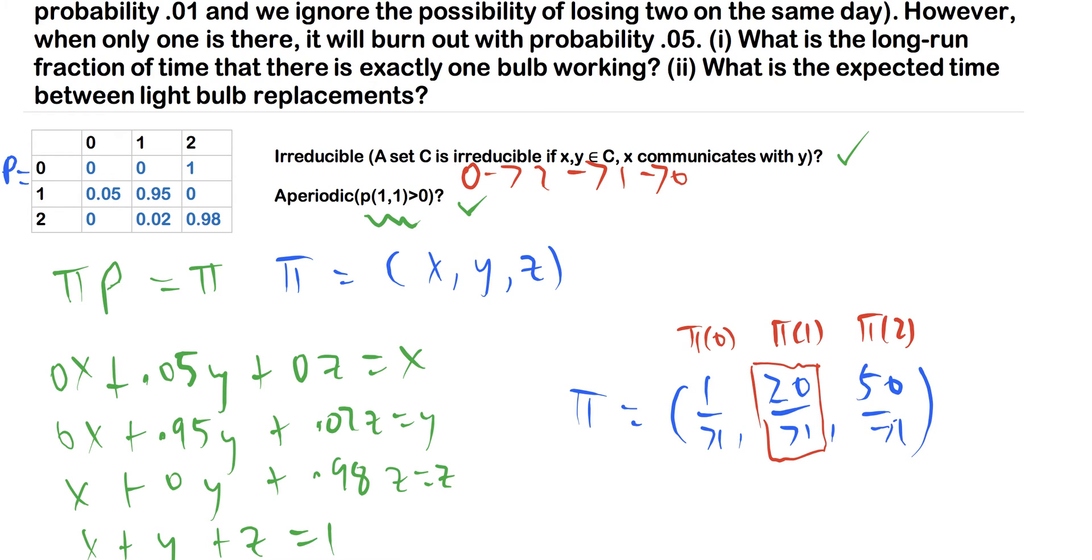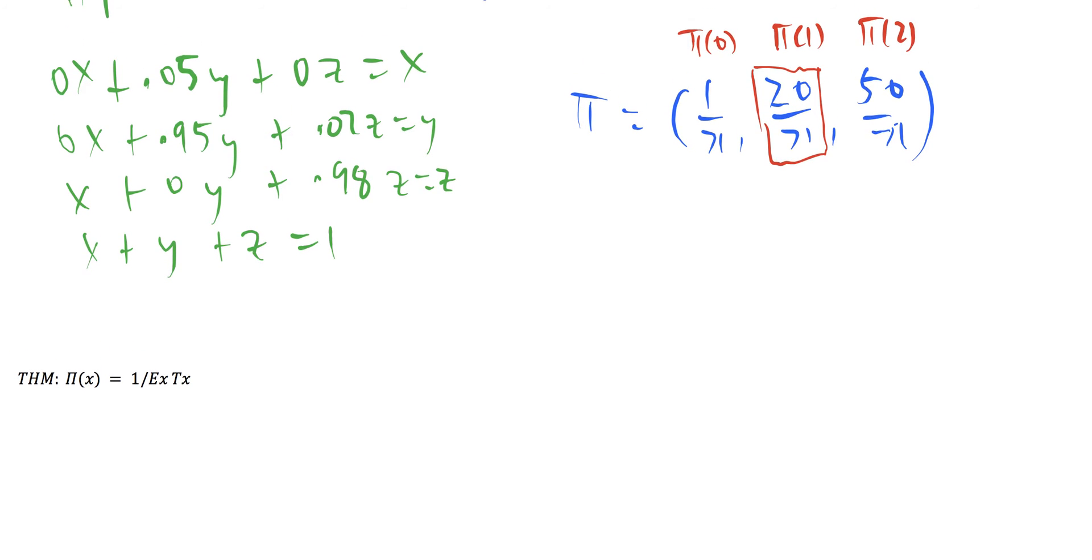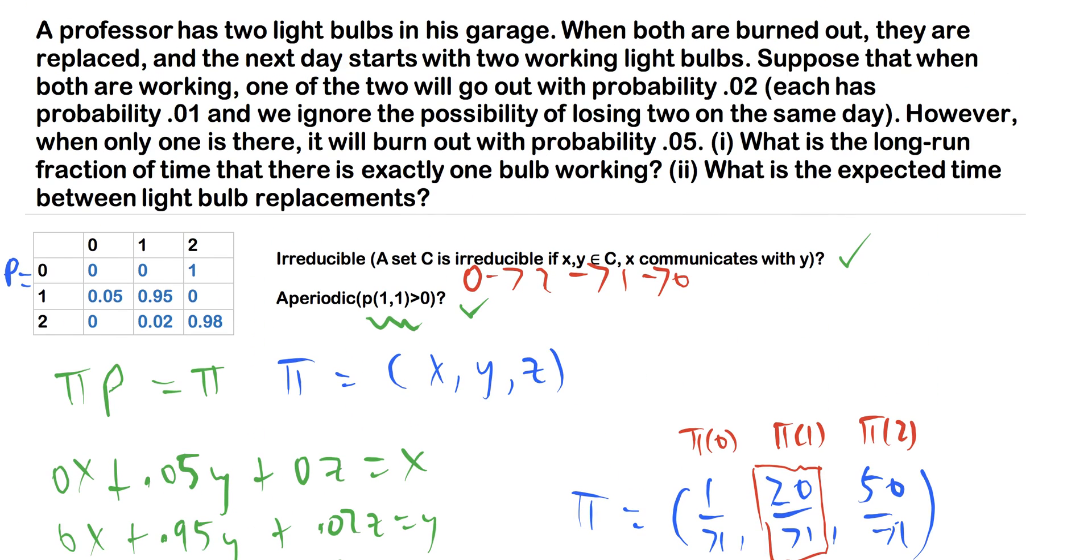Now moving on, what is the expected time between lightbulb replacements? Now since we've already found our stationary distribution, here this π of x, what we want to find is the expected time between lightbulb replacements. So all that is is pretty much, if we start with no lightbulbs, what's the expected time that we get back to—that we get to 0, excuse me—it's not starting at 0, what's the expected time that we get to 0 in order to replace the lightbulbs back to 2?